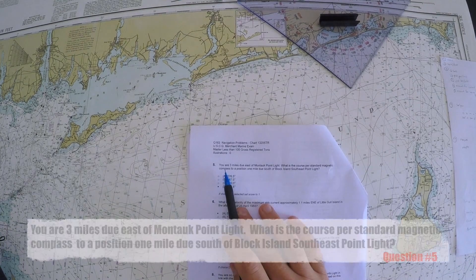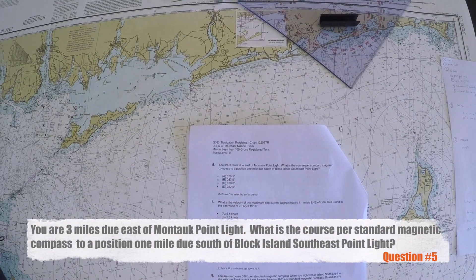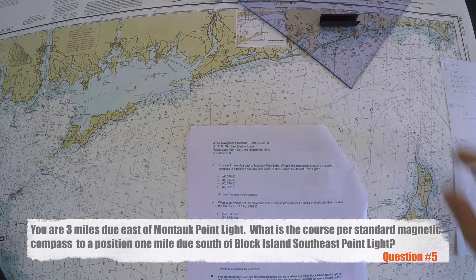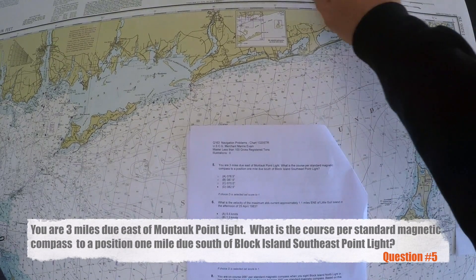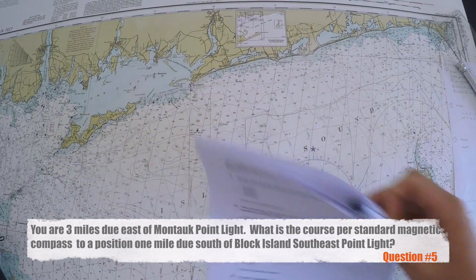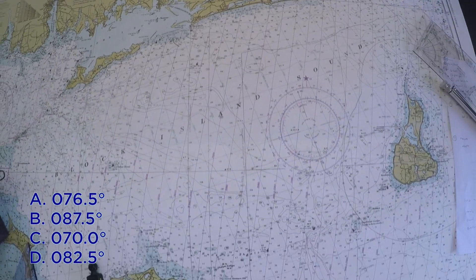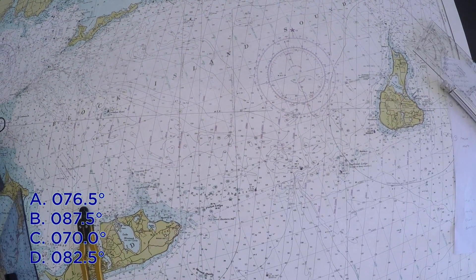Okay, so question number five: you're three nautical miles due east of Montauk Point Light. What is the course per standard magnetic compass to a position one mile due south of Block Island Southeast Point Light? The challenge to this question is finding the locations on the chart.